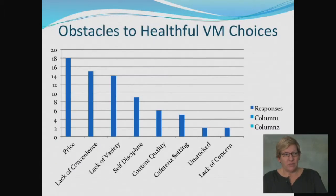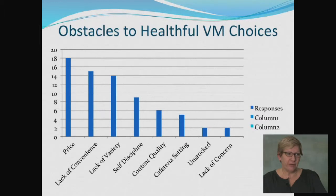These graphs show the frequency of responses for the deterrent categories. Price was considered the biggest deterrent, followed by lack of convenience, then lack of variety, and so forth.